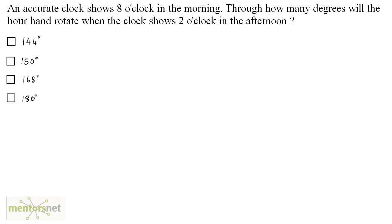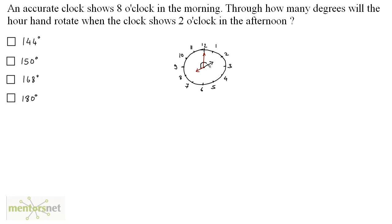An accurate clock shows 8 o'clock in the morning. Through how many degrees will the hour hand rotate when the clock shows 2 o'clock in the afternoon? So this is the clock showing 8 o'clock in the morning and in the afternoon it becomes 2 o'clock. By just looking at it you can tell that the hour hand has rotated by 180 degrees. So option D is the correct answer, but let's solve this problem traditionally.